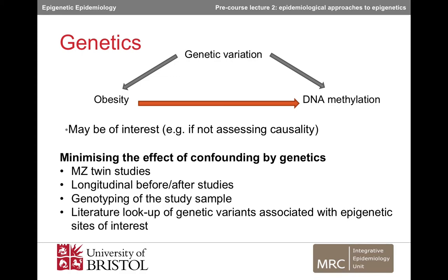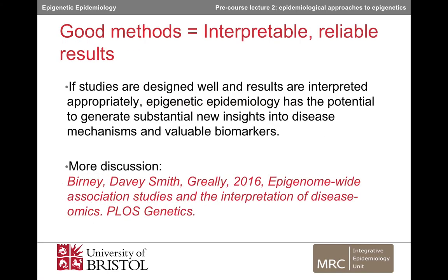For example, if we found in the literature that one of our obesity-related CpGs was strongly associated with genetic variation at FTO, we would be more aware that the obesity-methylation association was probably influenced by genetics. If studies are designed well and results are interpreted appropriately, epigenetic epidemiology has the potential to generate substantial new insights into disease mechanisms and valuable biomarkers. If you would like to read more about the specific methodological challenges in epigenetic epidemiological studies, then this article is a good place to start.